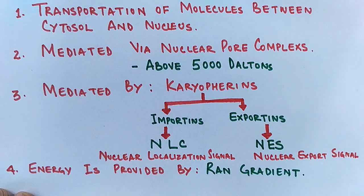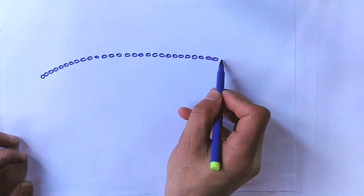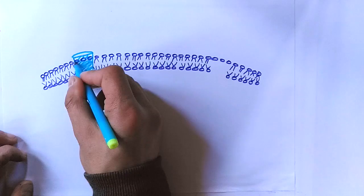Now let's see in detail how this process occurs within the cell. We see here the nuclear membrane or nuclear envelope which has got nuclear pore complexes like these we can see in this figure, through which this transport occurs.